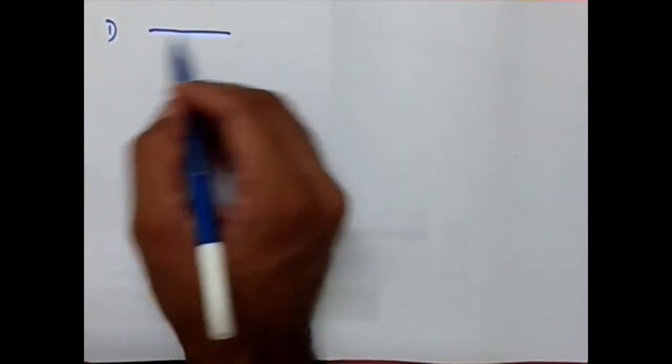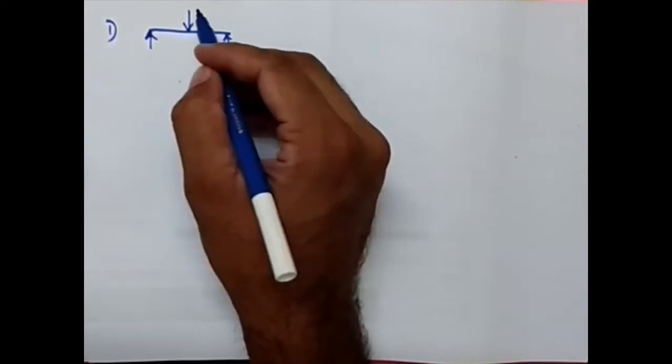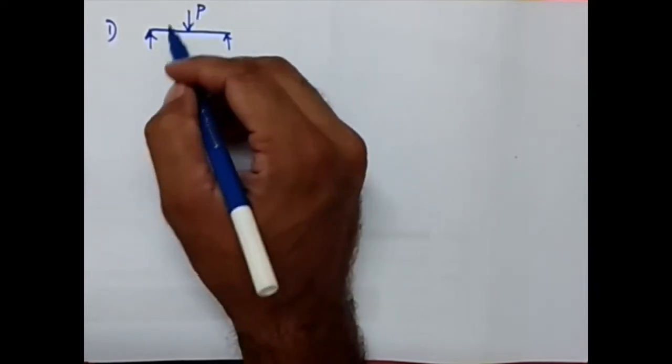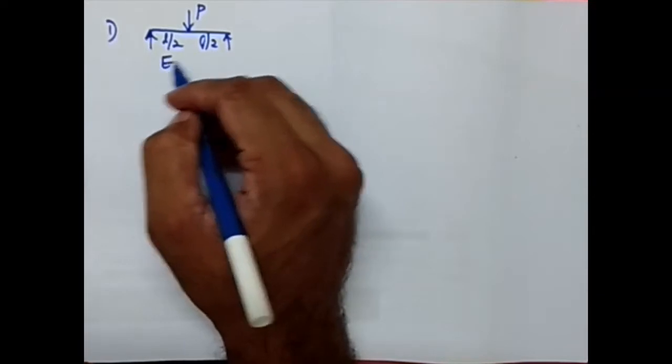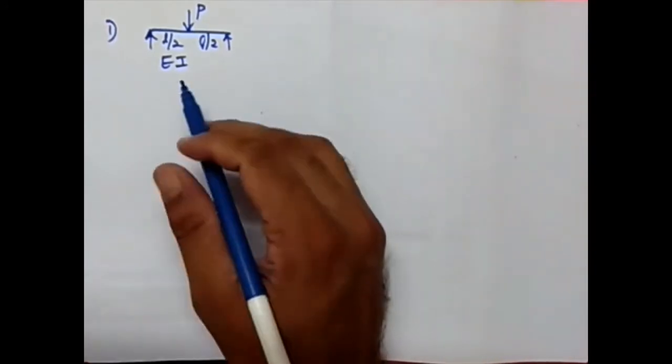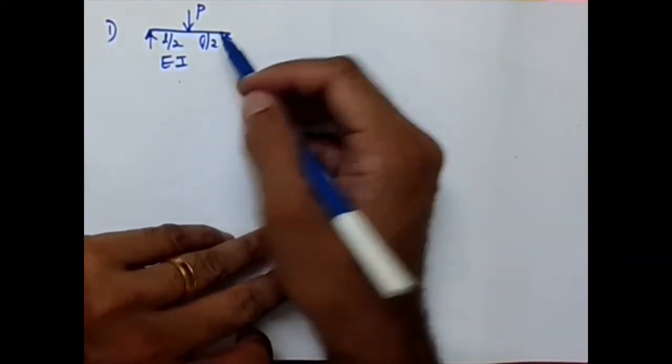Starting with Case 1, I'm taking the most familiar and simple case of a point load P acting at the center of a simply supported beam. Let the EI value be constant — the beam has constant flexural rigidity, meaning the material and cross-section are both constant.